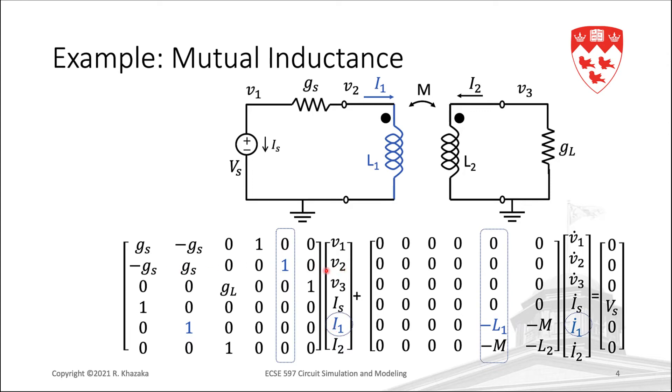The entry 1 in row 2, column 5, is simply adding I1 to the KCL equation at node 2. There is also an additional row, in this case row 5, which contains the inductor model. For now, if we look at the blue entries only, we simply have V2 equals L1 di1 by dt. In short, what we have so far in blue is the regular inductor stamp that we have already seen before.